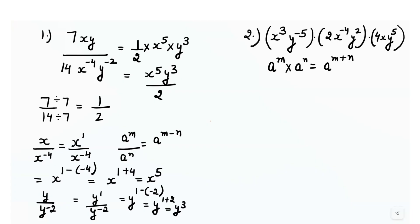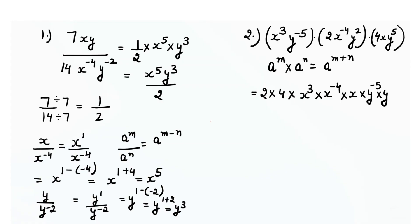Before applying this rule, we check for numbers. We have 2 and 4. So we write 2 times 4, then x raised to power 3 times x raised to power negative 4 times x. We write the like terms together, then y raised to power minus 5 times y raised to power 2 times y raised to power 5.